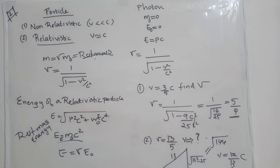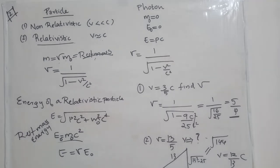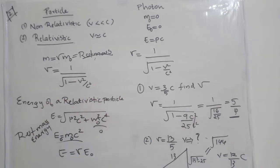Energy can also be written as gamma times the rest mass energy. For a photon, the rest mass energy is equal to zero. Substituting rest mass energy equal to zero into E = √(P²C² + M₀²C⁴), we get energy equals the square root of P²C², that is E = Pc. So for a photon, energy equals Pc. This concludes the discussion of relativistic and non-relativistic particles.